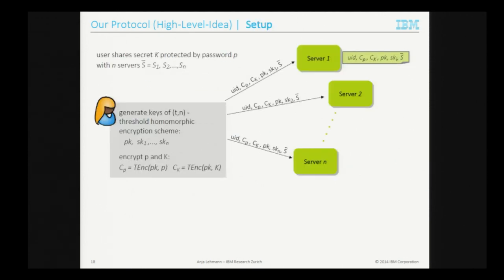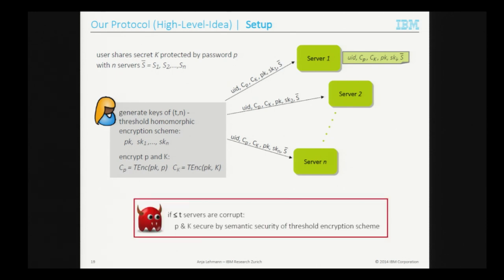At setup, the user generates fresh keys for this encryption scheme, then encrypts their password and key K under the newly generated public key. They distribute to each server: their username, the two ciphertexts, the public key, one secret key share per server, and the set of chosen servers. Servers without an account for that user ID simply store the information. We assume servers have certified public keys for secure communication — though having a public key does not mean a server is trusted; even bad servers can have certified public keys. If at most T servers are corrupt, the adversary learns nothing about the password or key K due to the semantic security of the threshold encryption scheme.